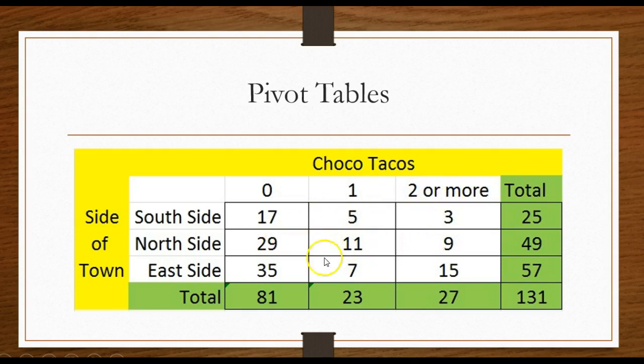North side same situation: zero, one, two or more. And with a pivot table I can see the total number of customers there on the south side, the north side, the east side.